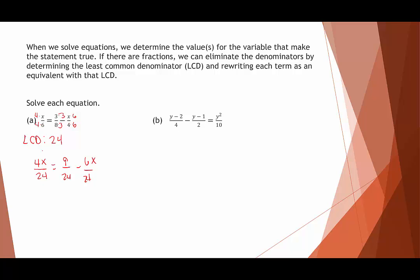Once all the denominators are the same, I can multiply the entire equation by 24. When we distribute it, the 24 cancels out the denominators, leaving us with 4x equals 9 minus 6x. Now we're done with the fractions.